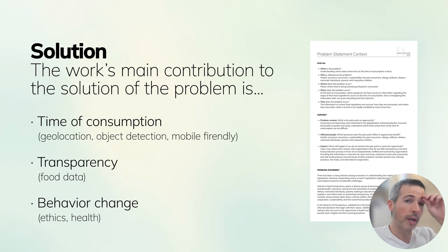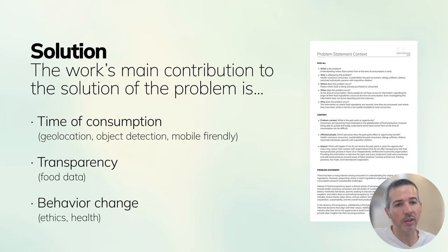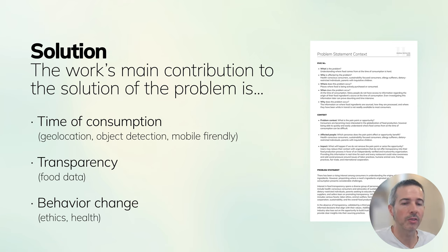The solution is centered on time of consumption — you're at a restaurant, so we have your location. If the mobile device knows where you are, we know the restaurant. The device also has a camera, so we can detect what the ingredients are. With the restaurant, the ingredients, and access to food data, we can tell where the entire meal came from. A user with that information can assess whether the restaurant aligns with their animal rights ethics, labor ethics, dietary goals, health concerns, or allergies — there are lots of possibilities to invoke behavior change.